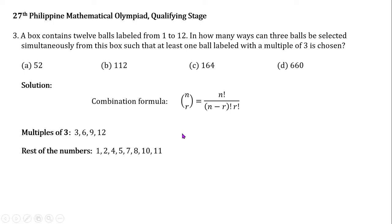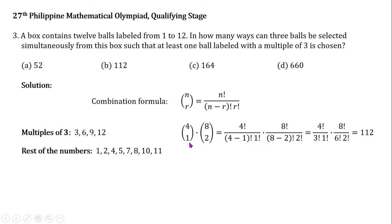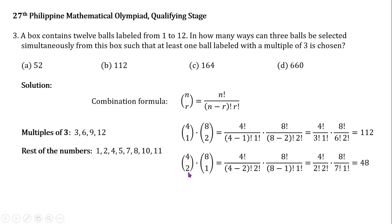Case 1: only 1 multiple of 3 is selected, and the other 2 are not multiples of 3. We can do that in 4 choose 1 times 8 choose 2 ways, which gives 112. Case 2: 2 multiples of 3 are selected, and the third number is not a multiple of 3. We can do this in 4 choose 2 times 8 choose 1 ways, which gives 48.